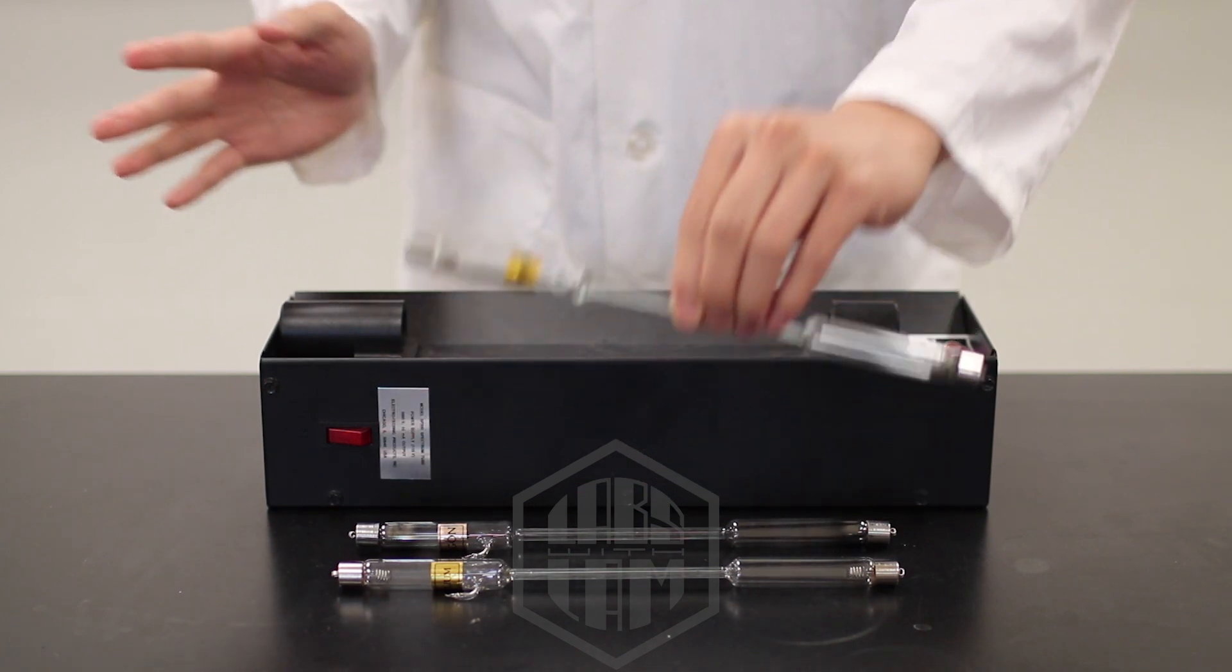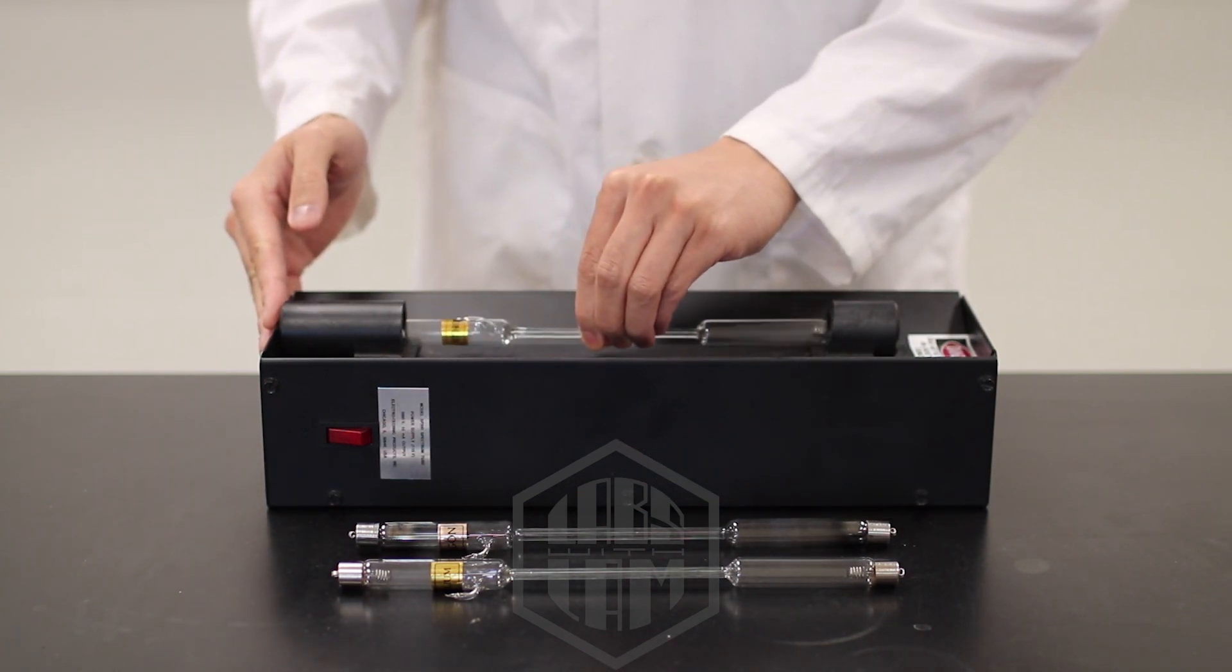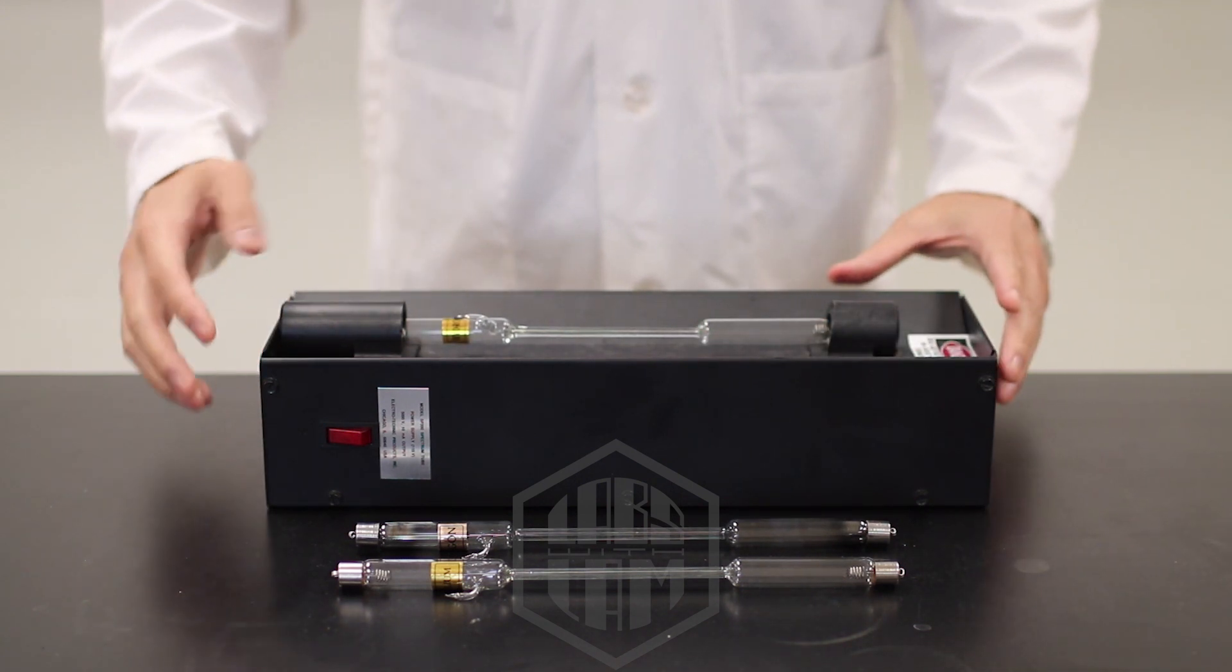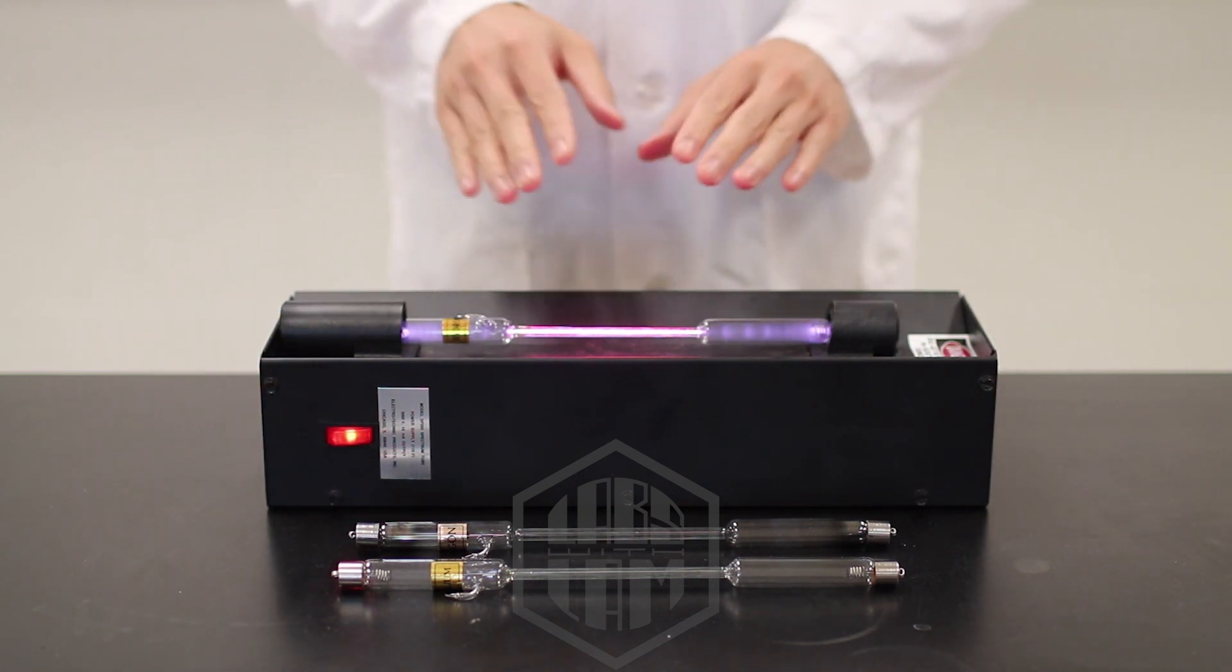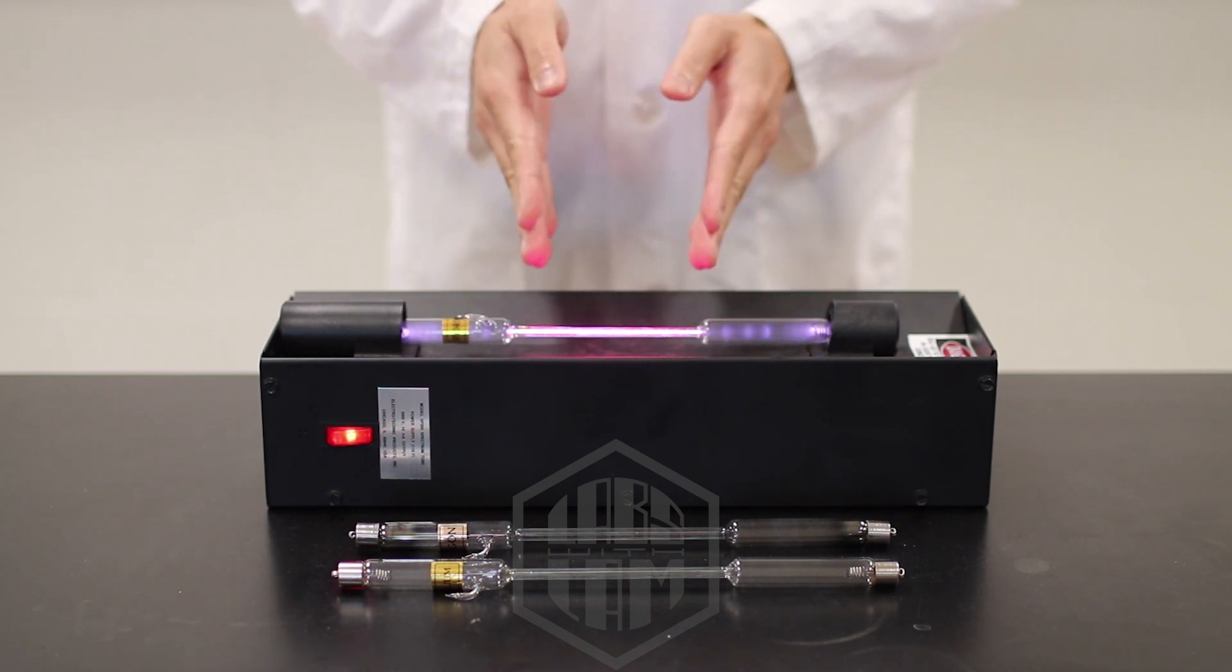So we're going to start with hydrogen, placing the spectral tube very carefully into the power supply, and we're going to turn it on. You should be able to see the spectral tube glowing. You can now take that spectral viewer I gave you earlier and aim it right here and you should be able to see hydrogen's line spectrum.